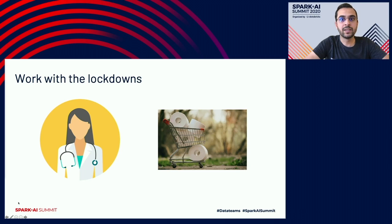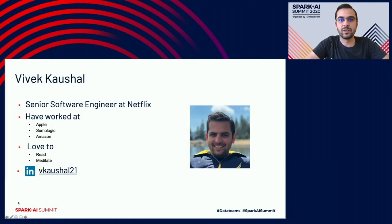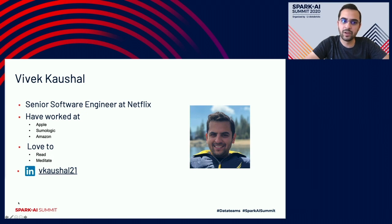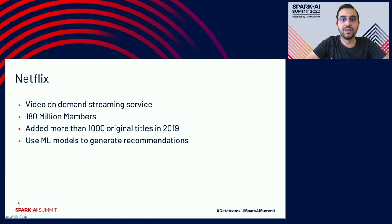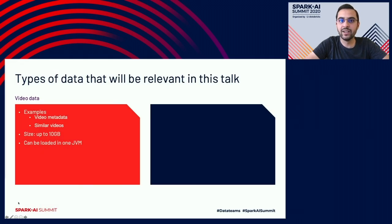For me, this acceptance of working with the lockdowns comes from the fact that I love to meditate and like to read. I've worked at Avid, Sumo Logic, and Amazon before, and right now I'm working as a senior software engineer at Netflix. Netflix is a video on-demand streaming service. We have more than 180 million members, and in 2019 we added more than 1,000 original titles to our catalog. We use machine learning algorithms to generate recommendations, and these machine learning algorithms are data hungry.